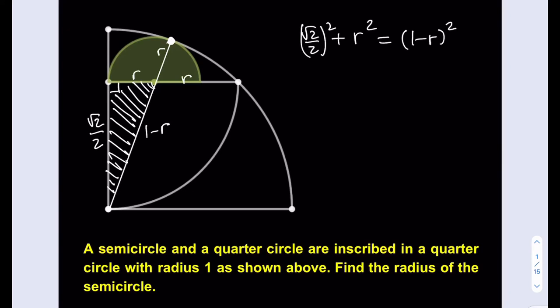Let's expand this. I'll be getting 1 half plus r squared equals 1 minus 2r plus r squared. Things cancel out really nicely here.